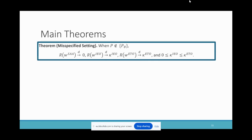The first theorem says that when the model is misspecified, as n goes to infinity, the regret of W_SAA converges to the minimum value zero because there is no model misspecification in SAA. But the regret of W_ETO converges to a value larger than what W_IEO converges to. This is because by construction, IEO ultimately identifies the theta with minimum expected cost among all parameters — so the parameter found by IEO is at least as good as the one found by ETO. Therefore, SAA is the best approach and ETO is the worst.